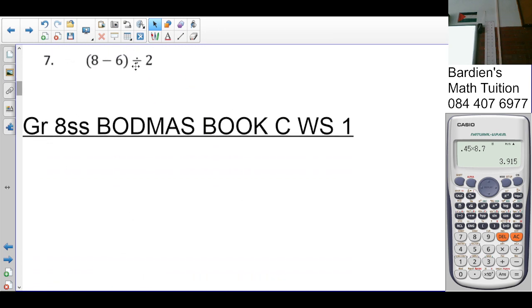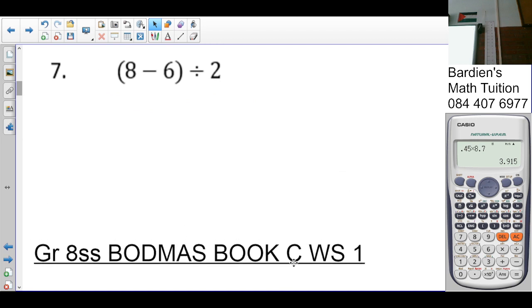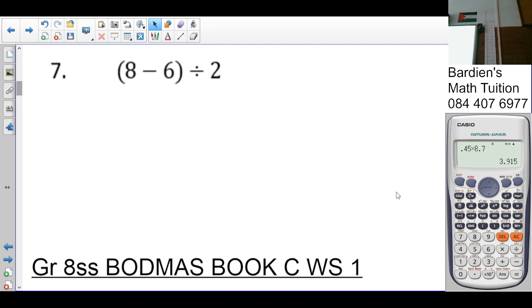Number seven, what needs to be done first? Brackets. Six minus two is four. Eight minus six is two divided by two. What's two divided by two? One. Another way I could have written that was two over two, which is also one.